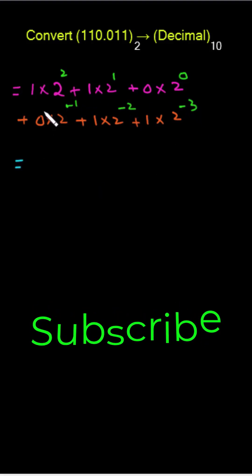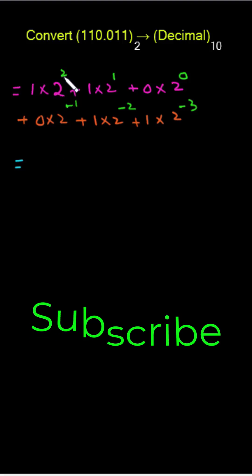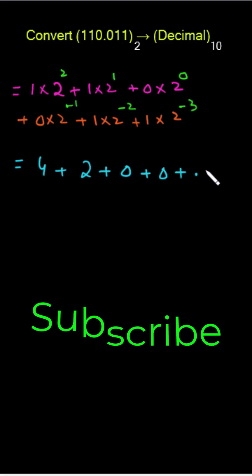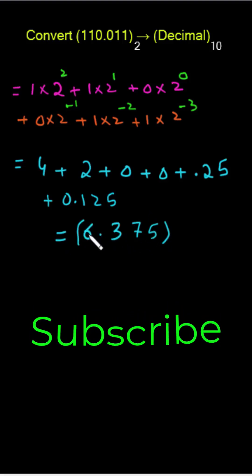I will get: 1 times 2² equals 4, plus 2, plus 0, plus again 0, plus 1/4 which gives us 0.25, and plus 0.125. So by addition, I will get 6.375. So this binary fraction has an equivalent decimal of 6.375.